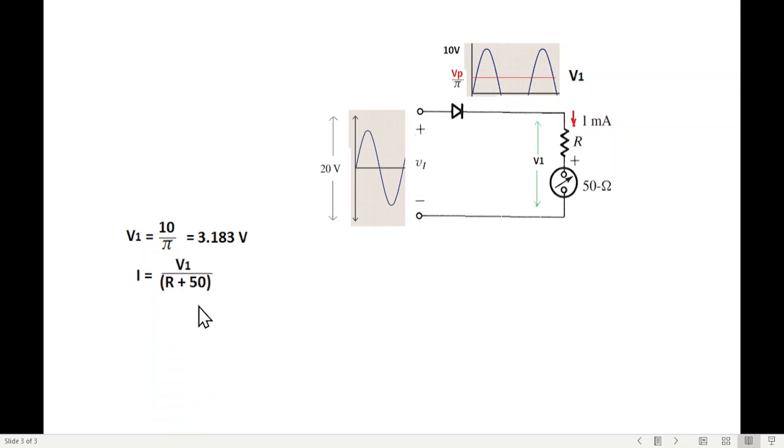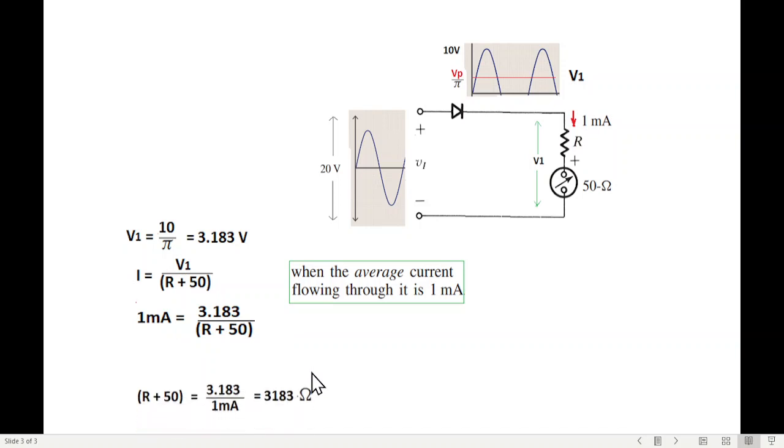I have V1 divided by total resistance, that means R plus 50. When the average current flowing through it is 1 milliampere, as given, 1 milliampere. V1 we calculated is 3.183.